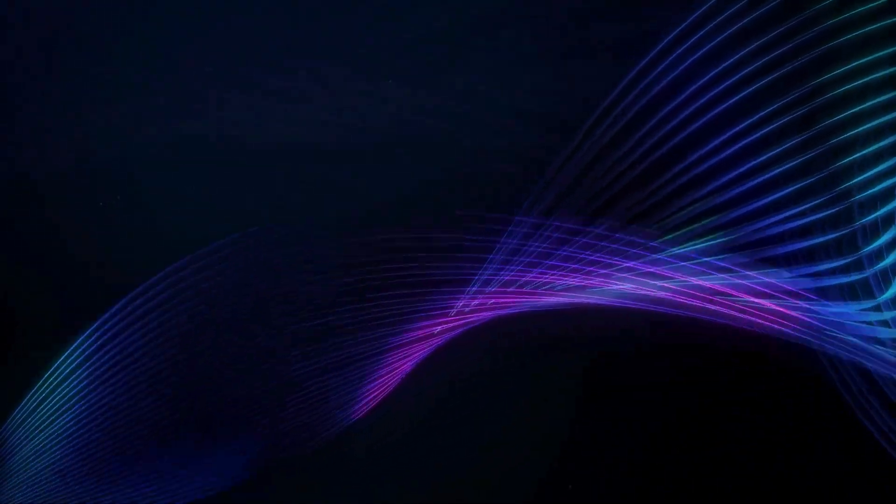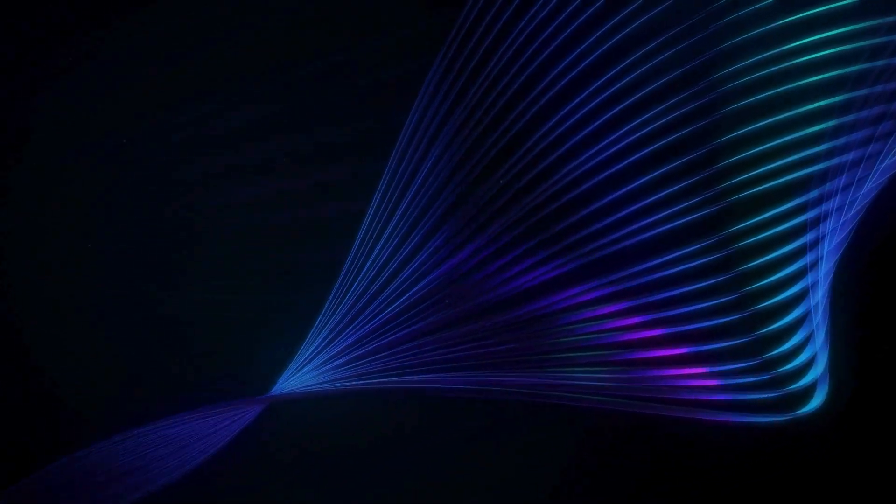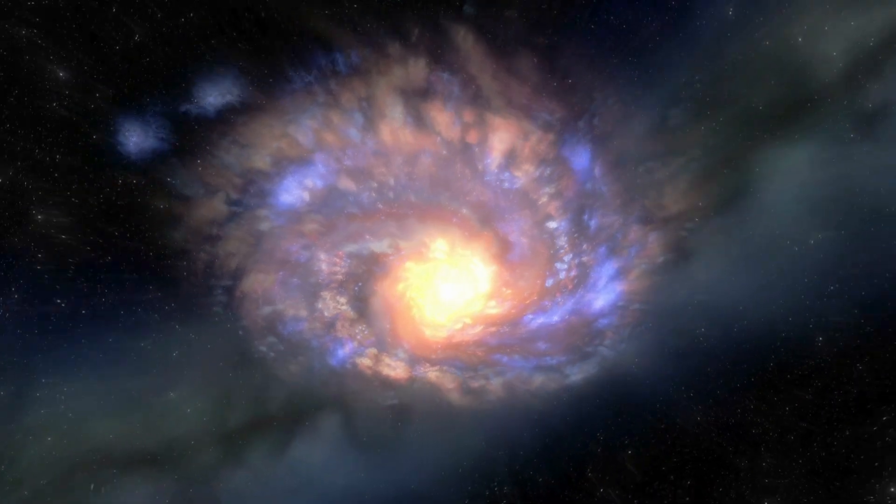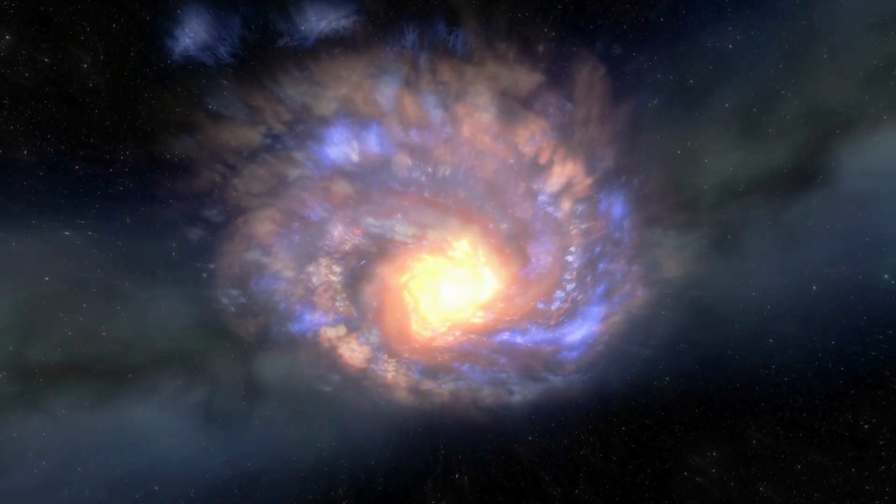this enigmatic planet has captured the attention of stargazers and researchers alike, akin to a Shakespearean hero full of intricacies and mysteries. Why all the fuss? First, Proxima b lies in our astronomical neighborhood, a mere 4.2 light-years from Earth.